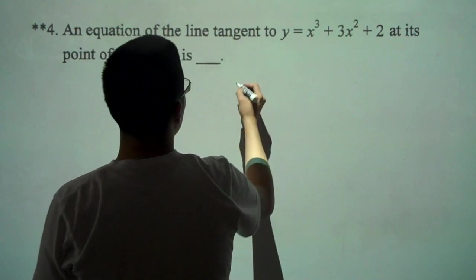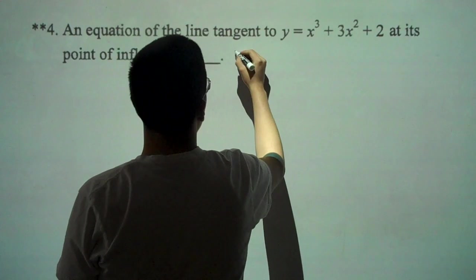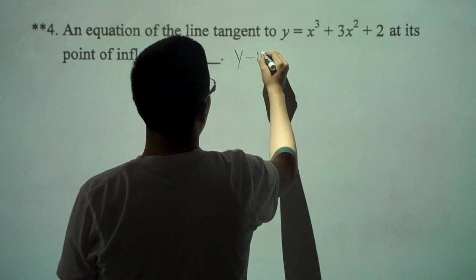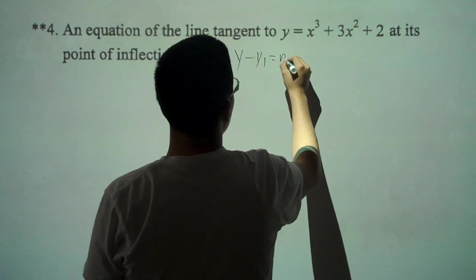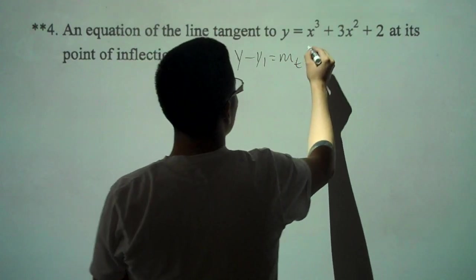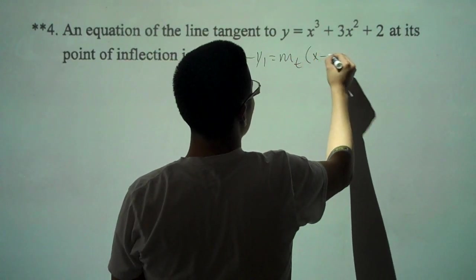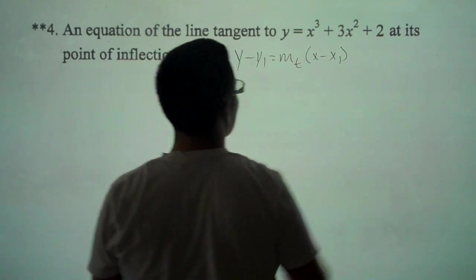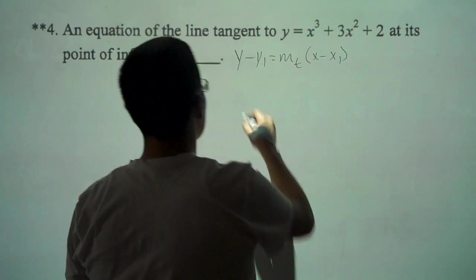we're going to have to use the equation y minus y1 equals m sub t times parentheses x minus x sub 1. This is for line tangent.